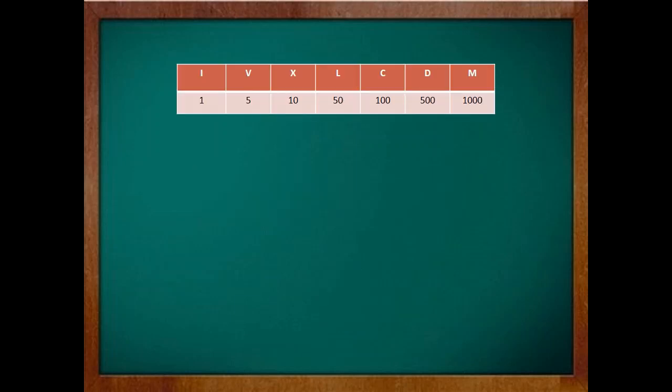Before jumping on to the exercises, let's quickly summarize what different symbols stand for. So I stands for 1, V for 5, X for 10, L for 50, C for 100, D for 500 and M for 1000.